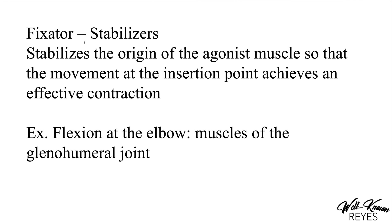A fixator is a stabilizer — it stabilizes the origin of the agonist muscles so that movement at the insertion point achieves an effective contraction. For example, in flexion at the elbow, the muscles of the glenohumeral joint act as fixators.